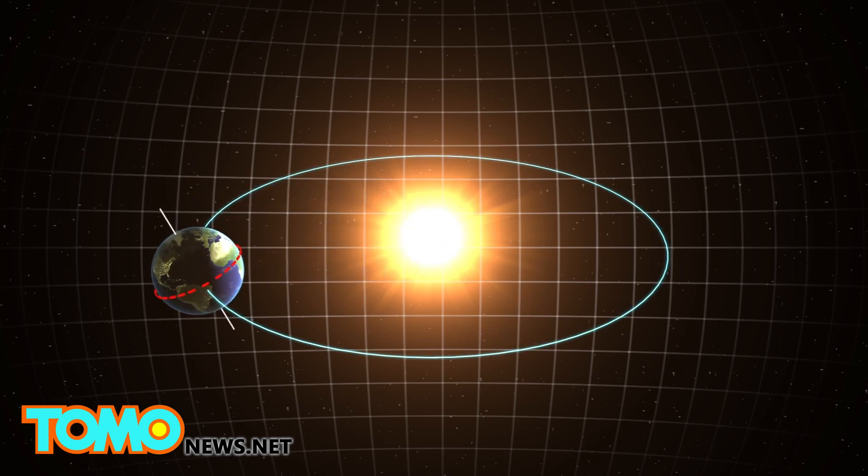When it's winter in the north, that area is tilted away from the sun. When it's summer, it's tilted towards the sun. Because of this tilt, day and night times are not usually equal, except on the two annual equinox days.